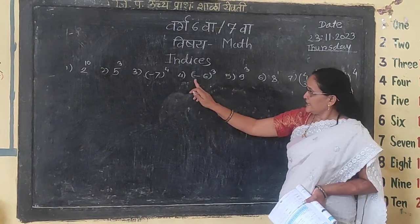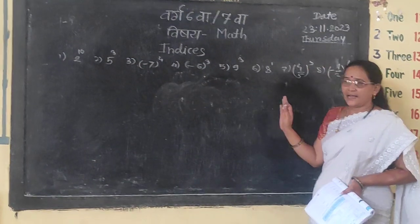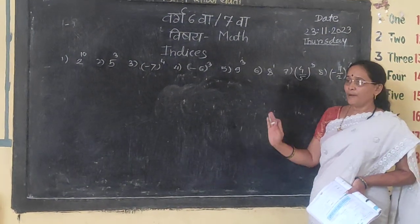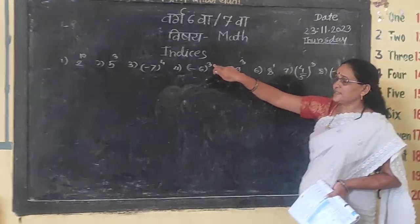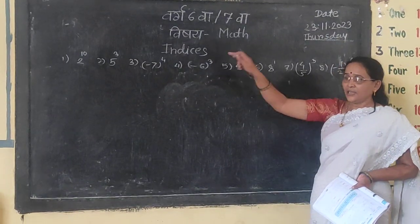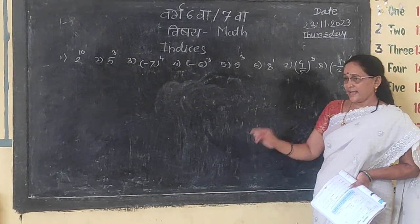If we take 2 to the power 3, the base is 2 and index is 3. Then we use the index to find the value.